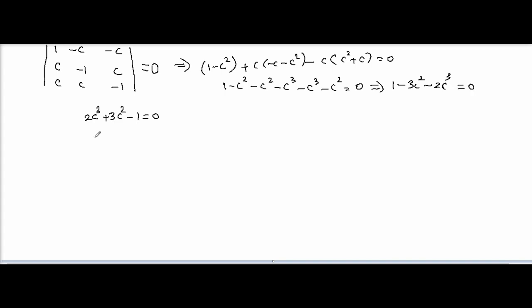Now we need to find the roots. Let's try smaller values. Consider c equal to minus 1. So minus 2 plus 3 minus 1, that is equal to 0. So c equal to minus 1 satisfies the equation. So c equal to minus 1 is one root.